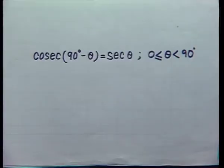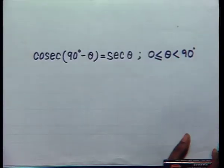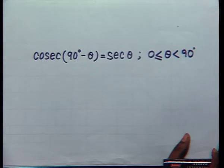Similarly, we have cosec(90° - θ) = sec θ, whenever θ is greater than or equal to 0 but less than 90 degrees. Using these results, let us solve a few problems.